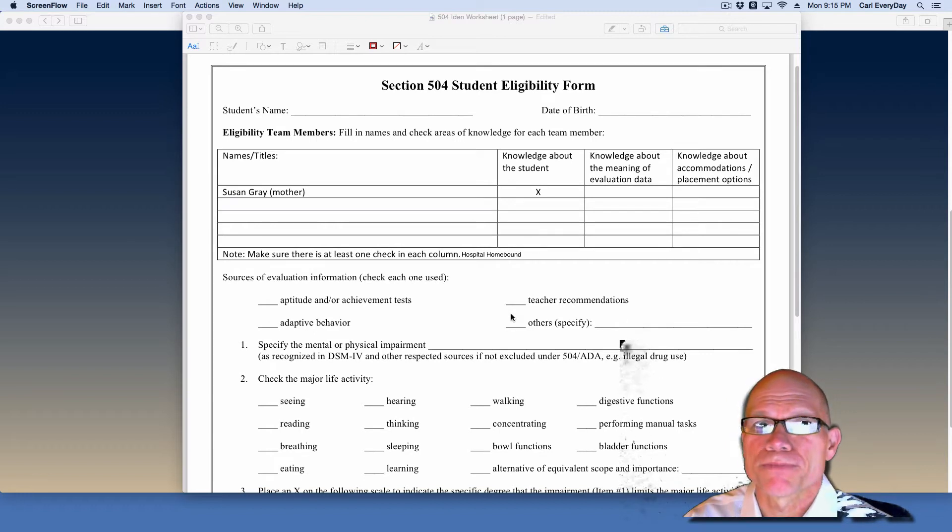I like this form because it incorporates all of the elements that are in the law in terms of making a determination of eligibility for a student in Section 504. A district or state that you work for might use a different form but it would likely include all of these elements. So let's walk through and talk about what some of those are.